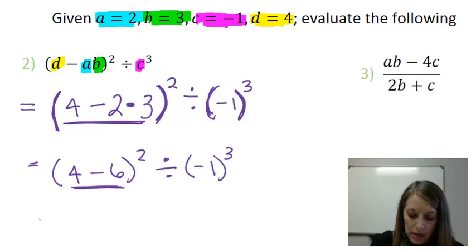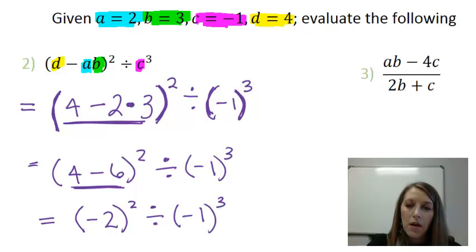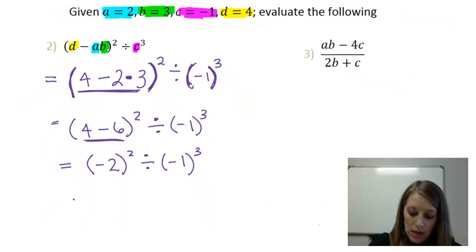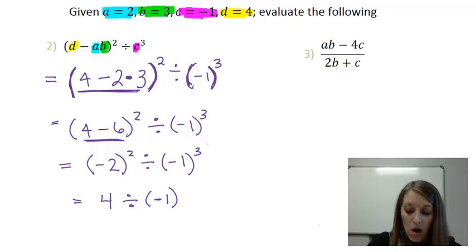Again, inside the parentheses, 4 minus 6 gives me a negative 2 squared divided by negative 1 cubed. Now I have parentheses left, but no operations in them, so I switch to my exponents. A negative 2 squared gives me a positive 4. Negative times negative gives me positive. And a negative 1 cubed gives me a negative 1. A negative an odd amount of times ends up to be negative.